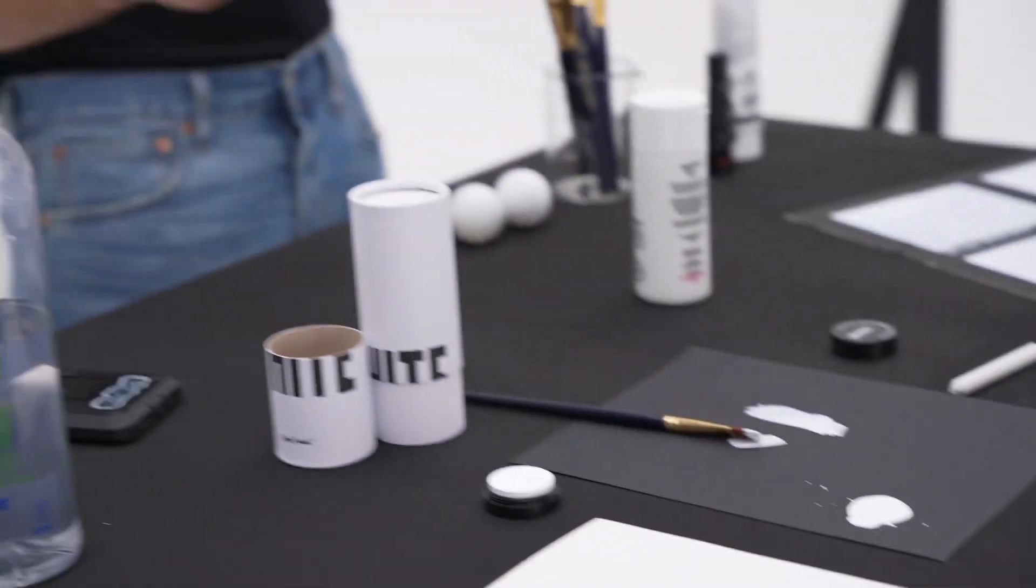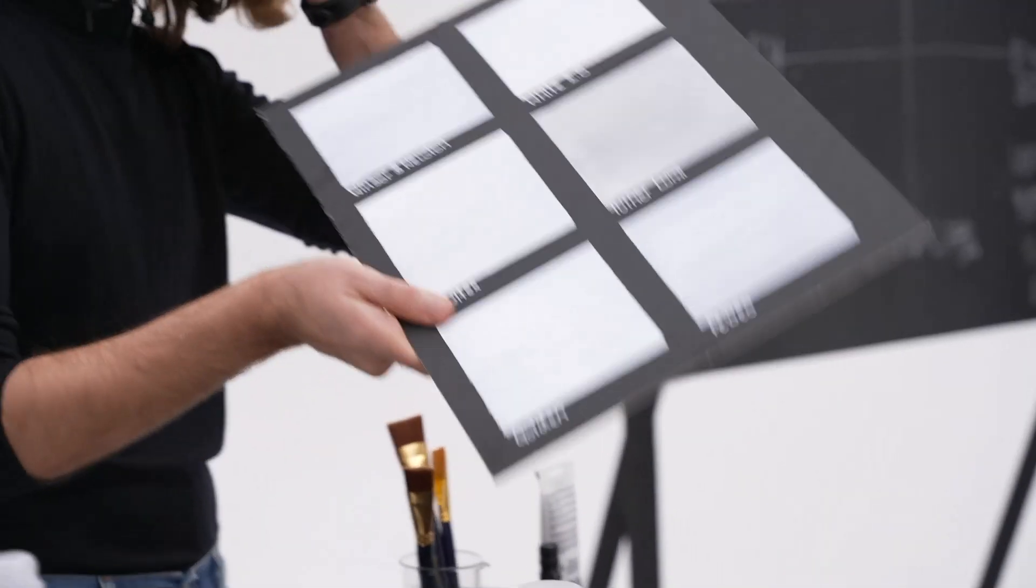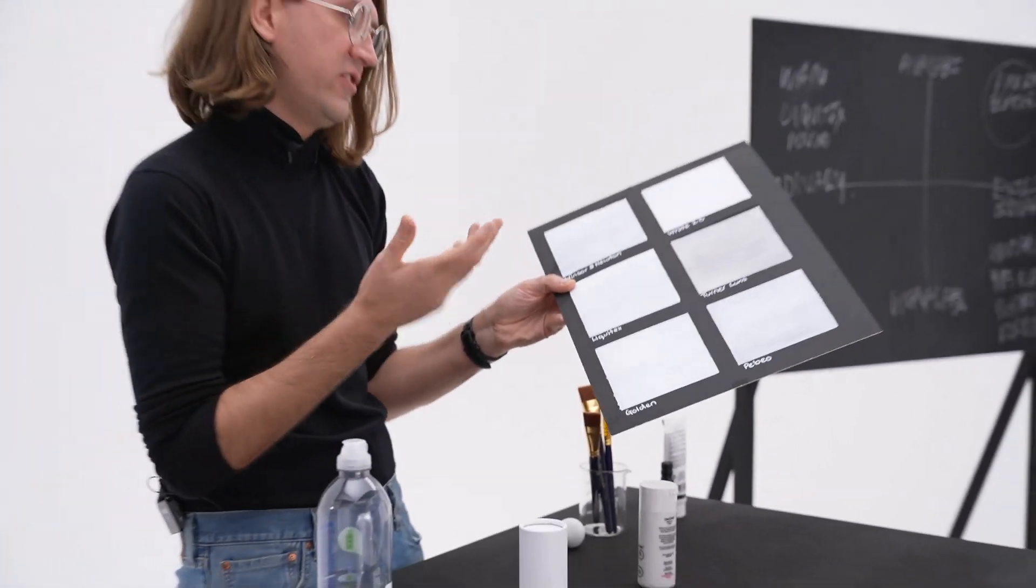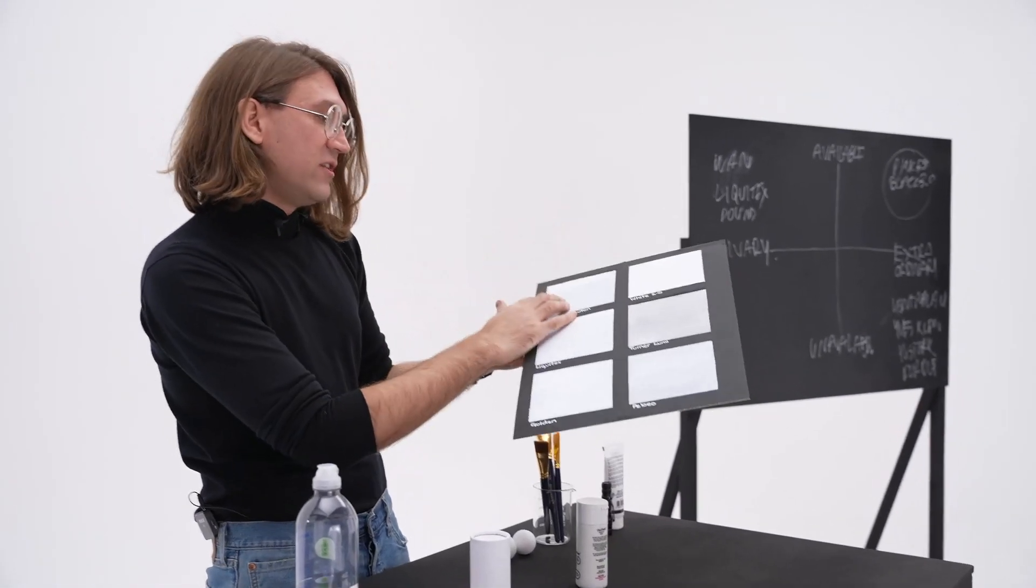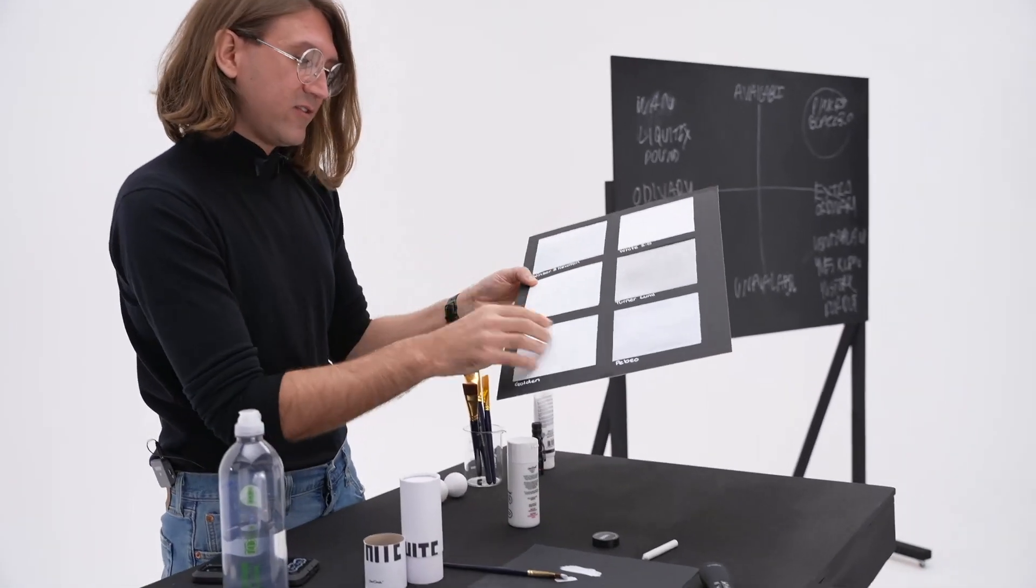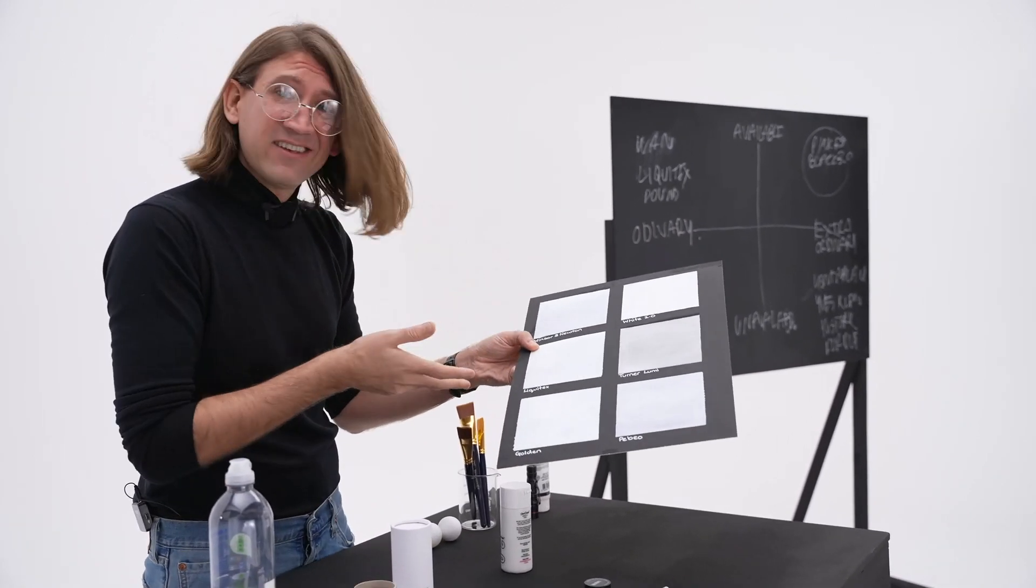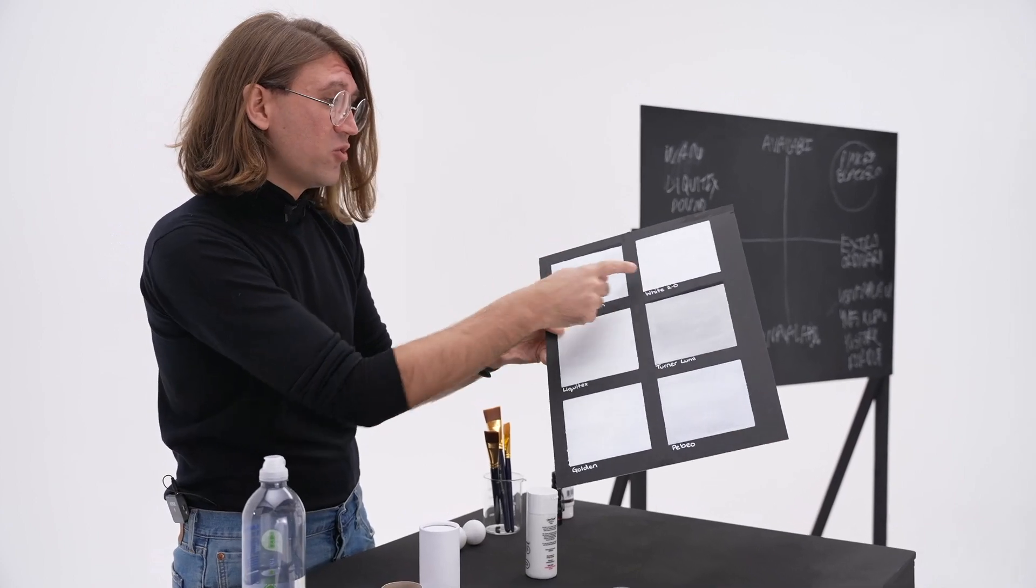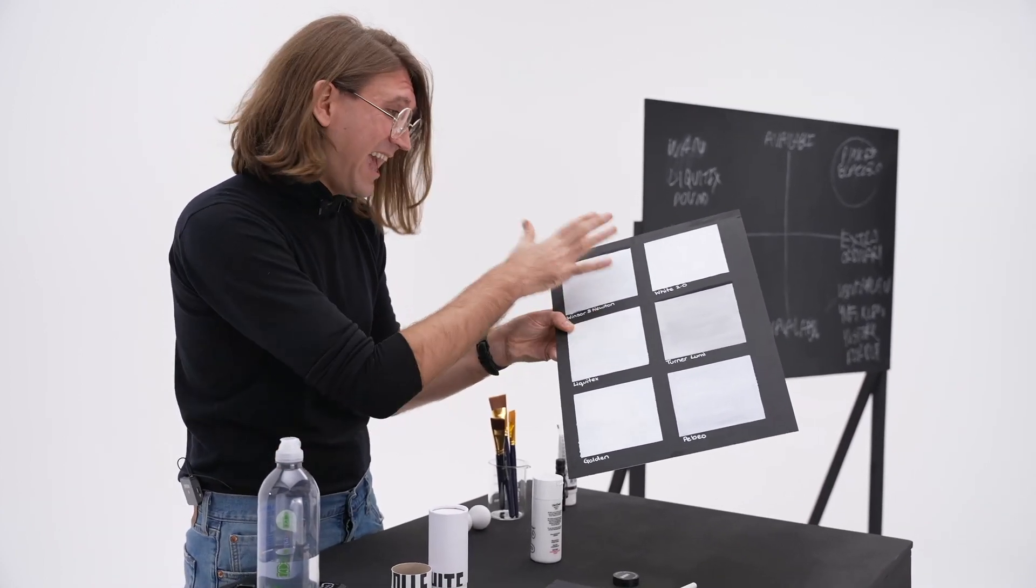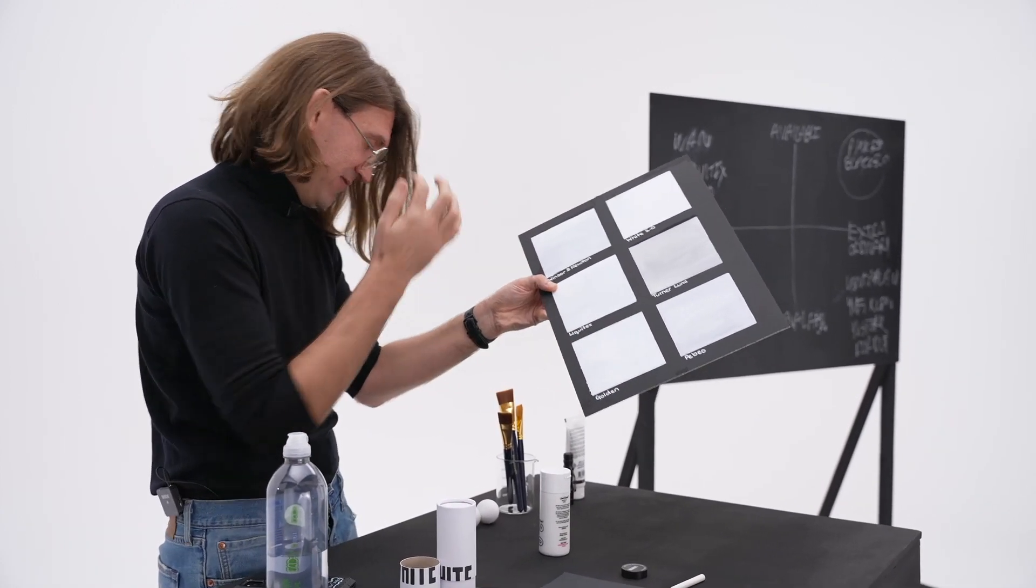So a couple of other things I wanted to show you. This is it in comparison with other paints. We benchmarked it against hundreds, believe me. Windsor & Newton, White 2.0, Liquitex, Golden, Peebo, and Turner. And these are some of the best paints that you can get. But here you can see, with just one coat, White 2 is doing everything you want it to do from a paint. It is absolutely lovely.